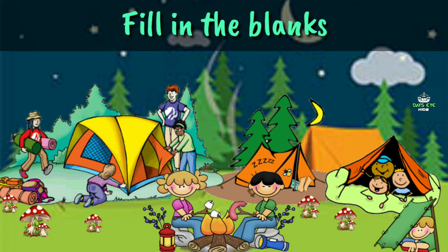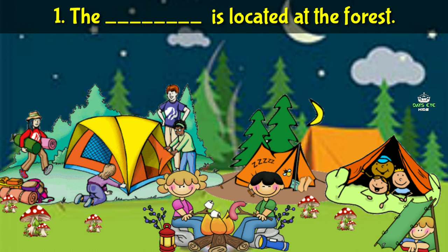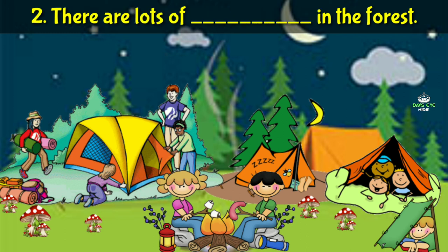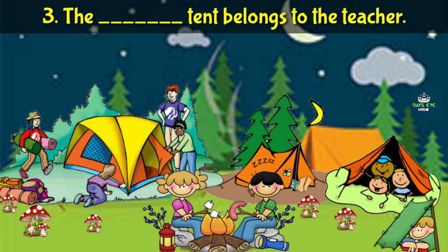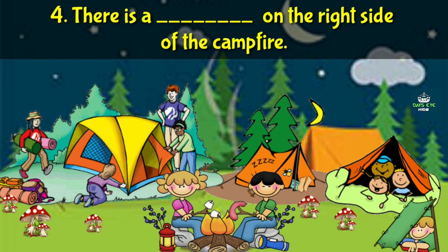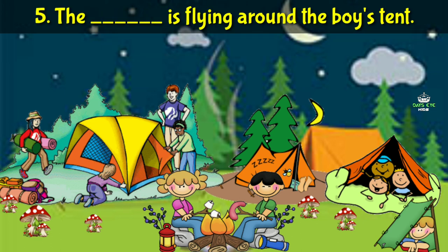Fill in the blanks. The dash is located at the forest — campsite. There are lots of dash in the forest — mushrooms. The dash tent belongs to the teacher — yellow. There is a dash on the right side of the campfire — torchlight. The dash is flying around the boy's tent — bee.